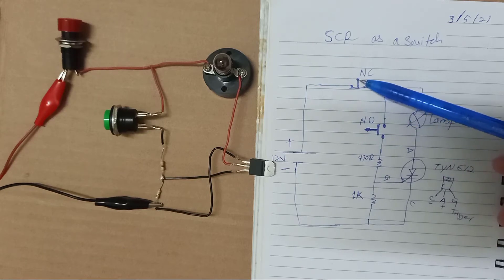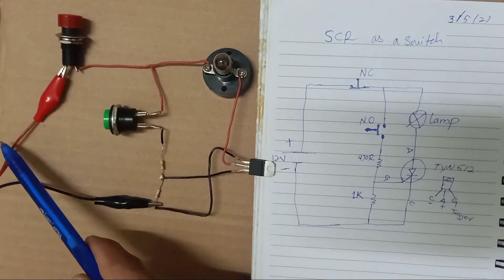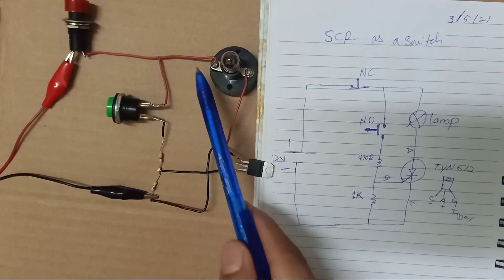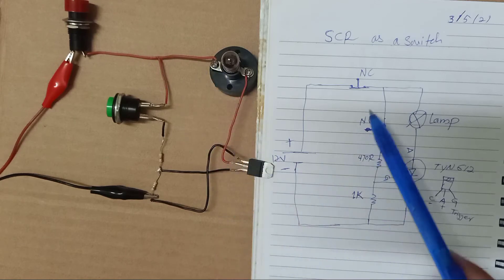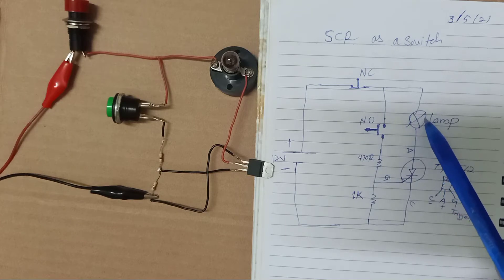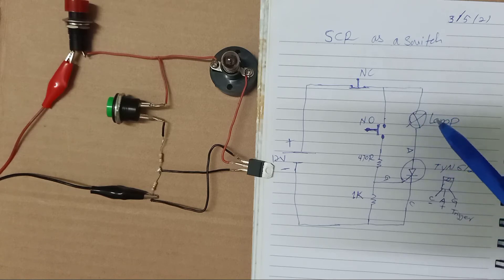There will be a normally closed switch. From the battery positive, we come here through the normally closed switch, and then to the load — which is a lamp here. You can use a motor, fan, or any DC electrical appliance.